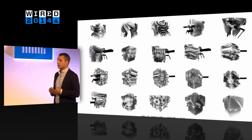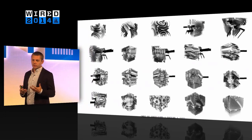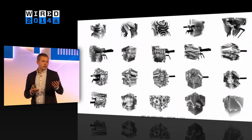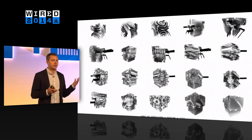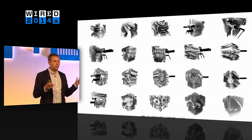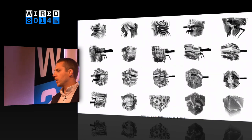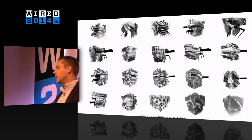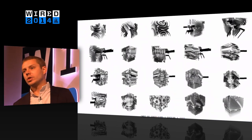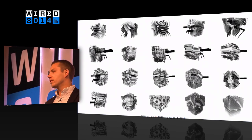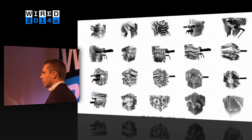I got into this work through the design world — I was studying architecture, and it was a moment when software was flooding design. Software radically changed how we design and what we can design. Computing allowed us to make massive iterations, geometric complexity, and to analyze and simulate geometry, mechanical properties, and environmental properties. So code became a new language for design.